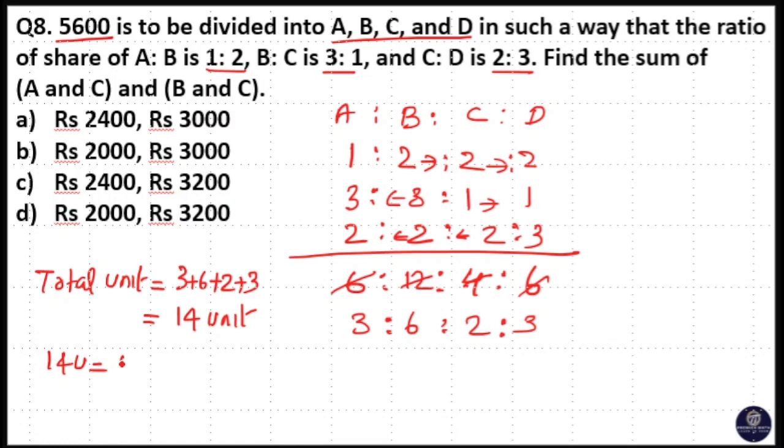14 units equal 5600 rupees, so one unit equals 400 rupees, because 5600÷14 = 400.